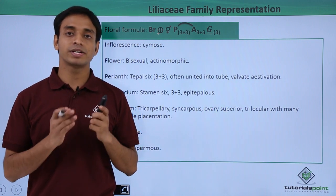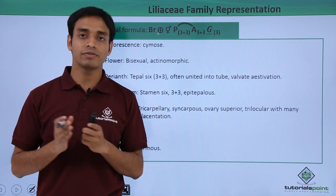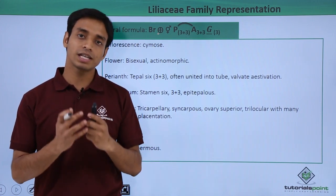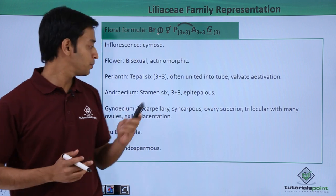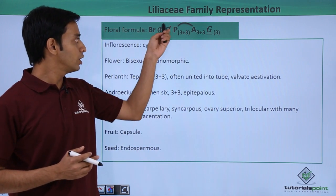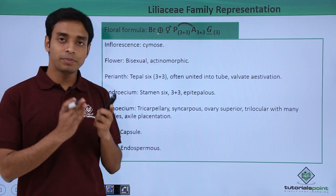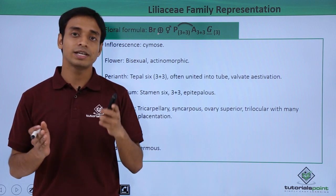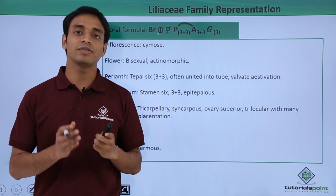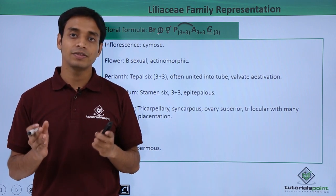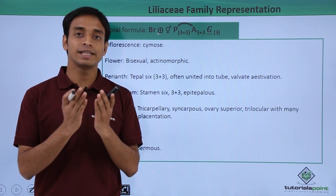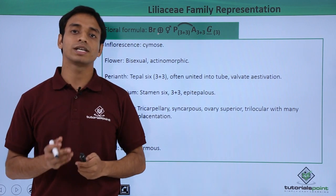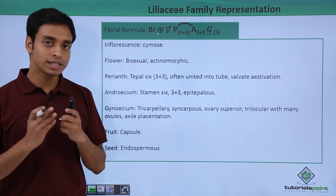Bisexual means the presence of male and female reproductive structures — androecium and gynoecium — on the same flower. The perianth here means the sepals and petals, that is the calyx and corolla, are in fused form and cannot be differentiated; those are known as tepals or the perianth.